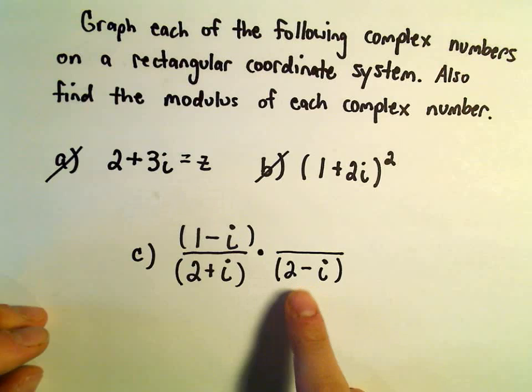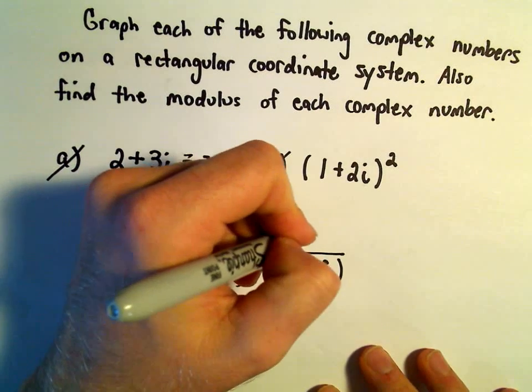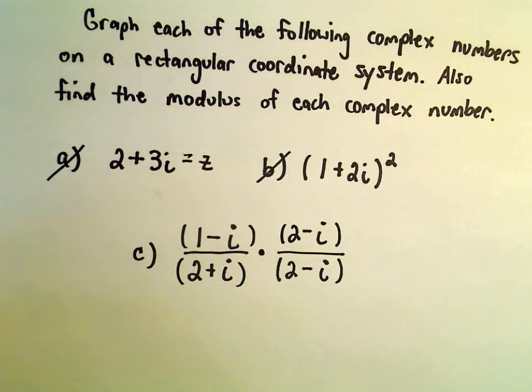So I'm going to multiply the denominator by 2 minus i, but that also means we have to multiply the numerator by 2 minus i.